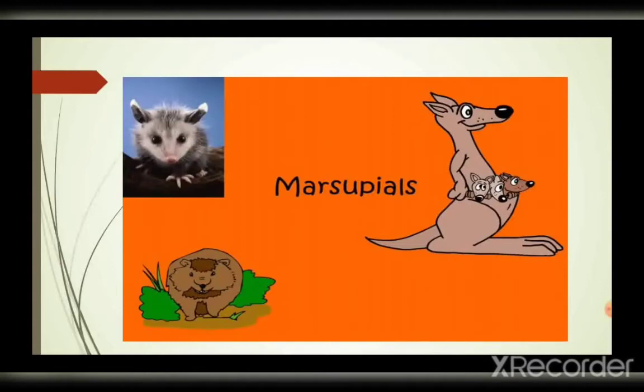Marsupials. What are marsupials? There are some animals that carry their young ones in their pouch. Look at the picture of a kangaroo — they have a pocket, that's called a pouch. They carry their young ones in their pouch. They are called marsupials. Not only kangaroos; there are a few more animals that carry their young ones in their pouch. They are called marsupials. So let's have a song about marsupials — enjoy the song, you'll understand better.